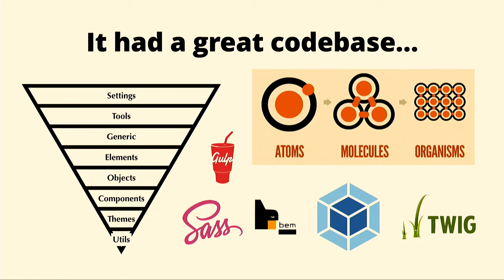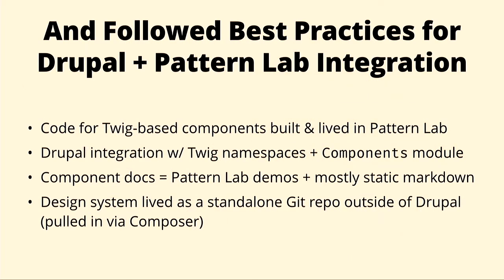We used approaches like atomic design and inverted triangle CSS for our CSS architecture, and took advantage of tools like Webpack, Gulp, Sass, and of course Pattern Lab. We implemented virtually every best practice from the DrupalCons of yesteryear for building a Drupal-friendly Pattern Lab-integrated design system — things like building components straight inside Pattern Lab and mapping them back to Drupal via the components module.